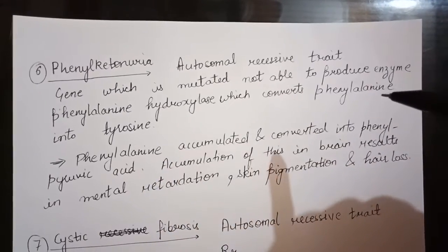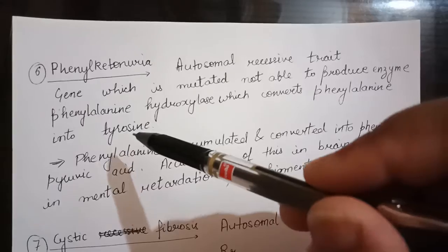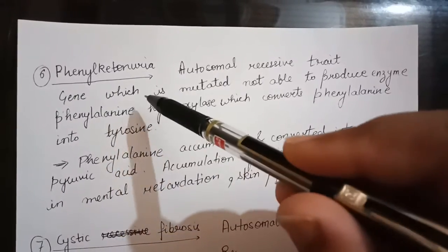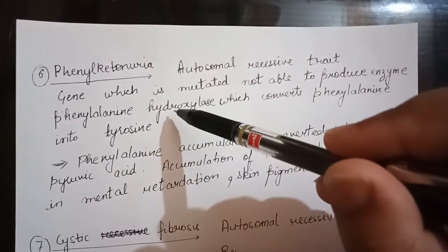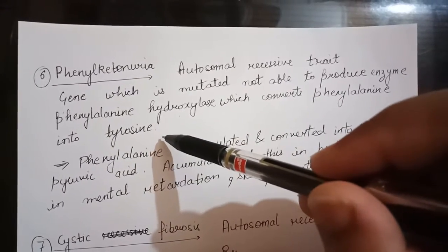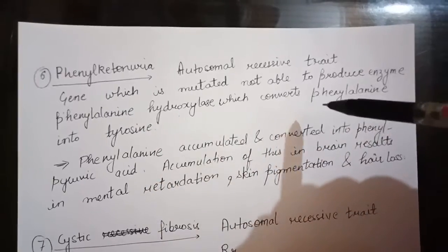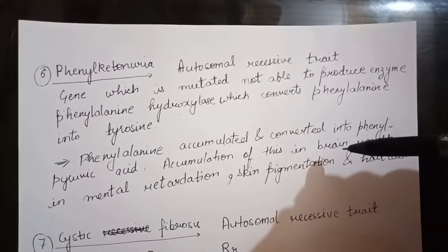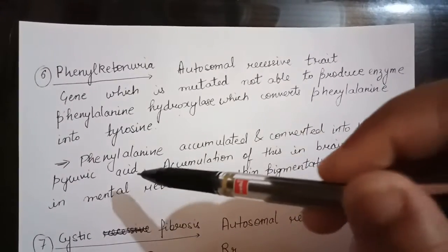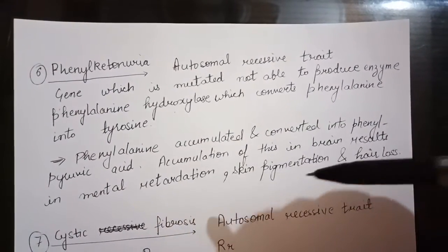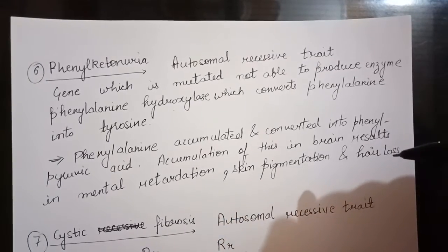Since phenylalanine hydroxylase is not produced, phenylalanine cannot be converted into tyrosine. Instead, it accumulates in the brain and gets converted into phenylpyruvic acid. This is the reason it results in mental retardation, skin pigmentation, and hair loss.